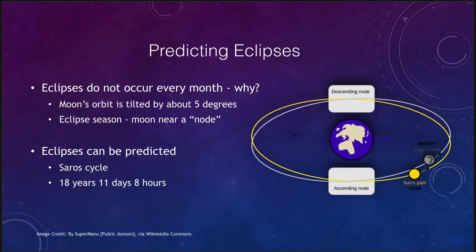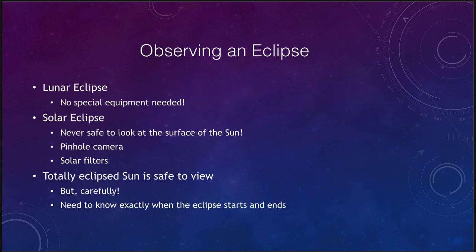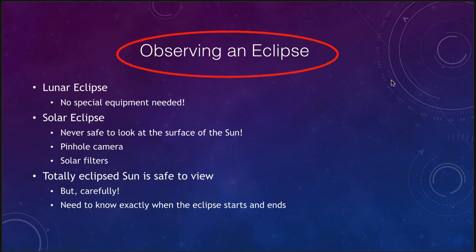How do we observe an eclipse? It depends on the type. For a lunar eclipse, no special equipment is needed — you can simply go out and watch. These always occur at night because they happen during the full moon, which is only up when the sun is below the horizon. You'll never see a lunar eclipse during the day, only at night, and nothing special is required to observe it.